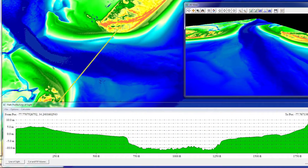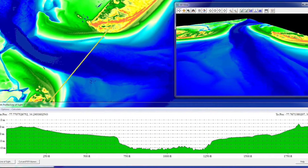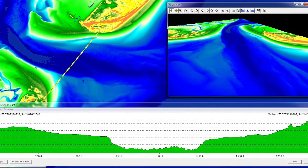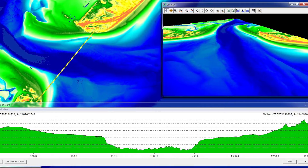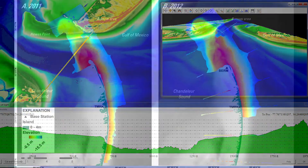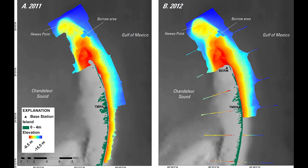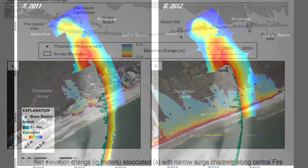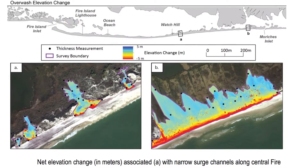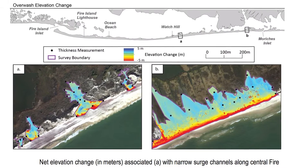Coastal engineers and scientists use elevation data to understand sediment movement, beach erosion, and sediment budgets. This information is used to develop management plans to restore, monitor, and maintain beaches in the coastal zone.